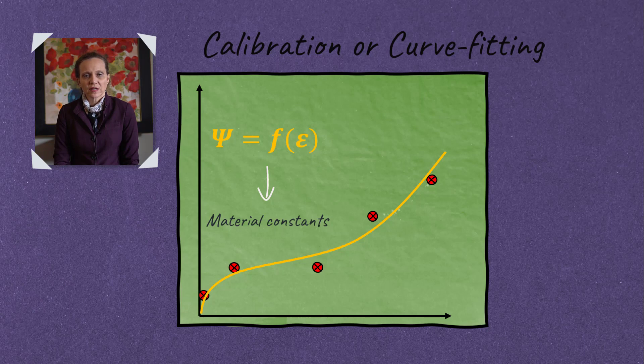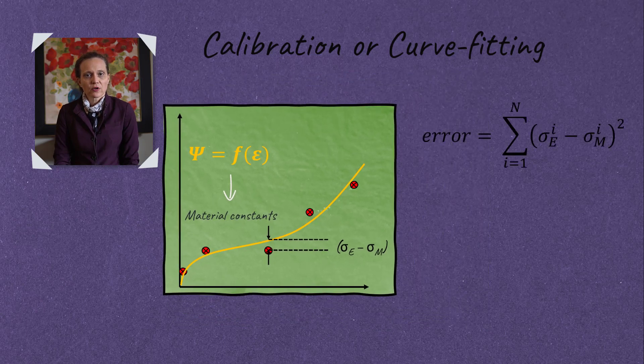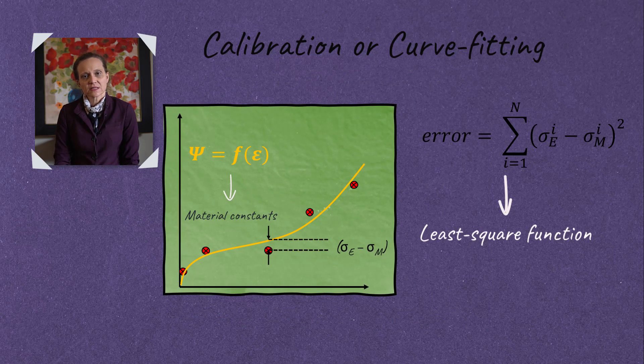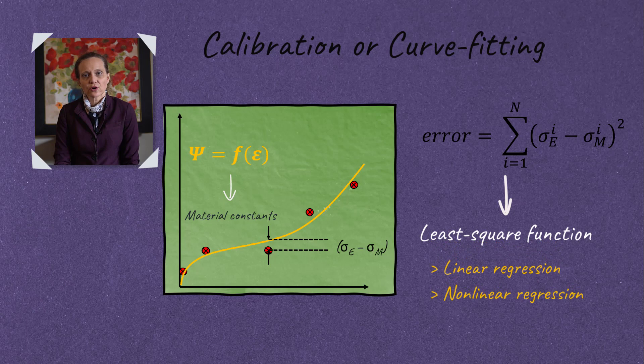When we perform curve fitting, we are calculating the cumulative mismatch between the experimental data and model prediction and minimize this value for an optimal set of material constants. This error function is called a least square function and depending on the nature of the model and the number of material constants, either a linear or nonlinear regression method is used to minimize it.